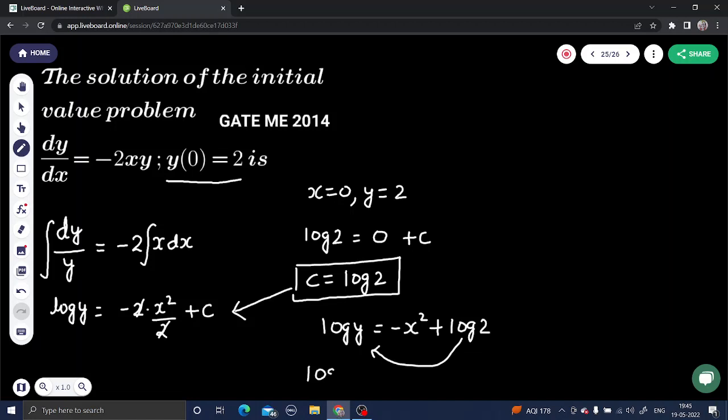Now what is this? log y equals to minus of x square and c. LHS get log y minus log of 2 equals to minus of x square. Then we have formula: log a minus log b equals log a by b, provided base same and base is e. So base e we can compress: log of y by 2.